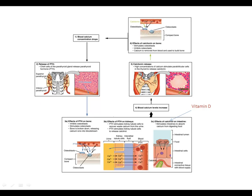This diagram shows how those three hormones regulate blood calcium levels under two different scenarios: when blood calcium levels are low and when they are high. Let's start with what happens when blood calcium levels drop. Two hormones are involved — parathyroid hormone and calcitriol. The first thing that happens is PTH is released, circulates in the bloodstream, and has its effects when it reaches the bone and the kidneys.